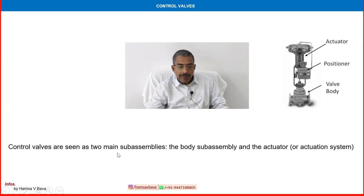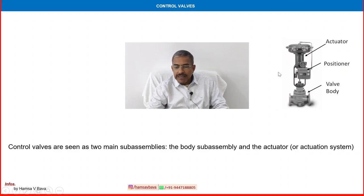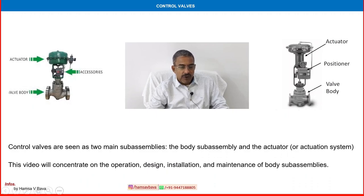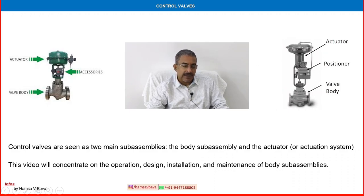Control valves are seen in two main sub-assemblies. The body assembly — the lower part is the body assembly, using different types of valves. The upper side is the actuation system, including the positioner. In this video, we will concentrate on the operation, design, installation, and maintenance of the body assembly. In our later videos, we are going to cover the positioner and actuator system, but in this video we are focusing on the bottom side.